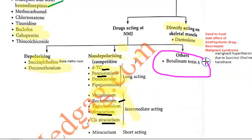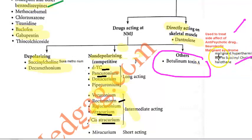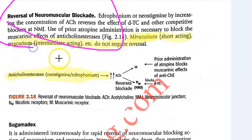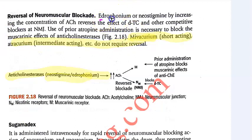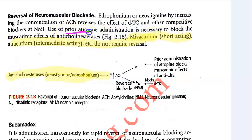Others include botulinum toxin A and dantrolene, which is used to treat malignant hyperthermia caused by succinylcholine plus general anesthesia such as halothane. To reverse the neuromuscular block, edrophonium and neostigmine increase acetylcholine concentration and reverse the effect of D-tubocurarine. Importantly, atropine must be administered prior to anticholinesterases to block their muscarinic effects.